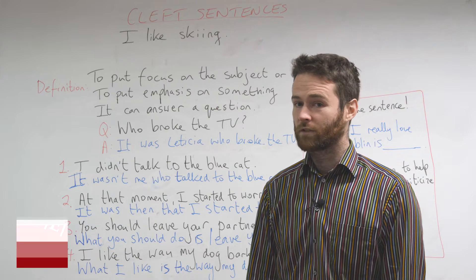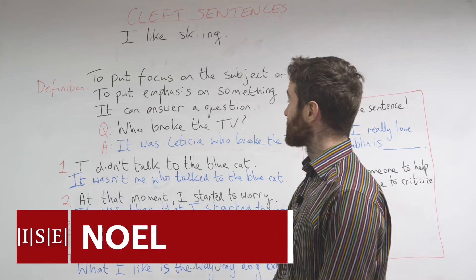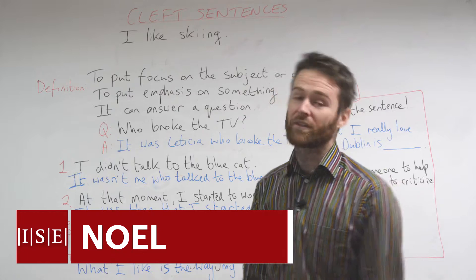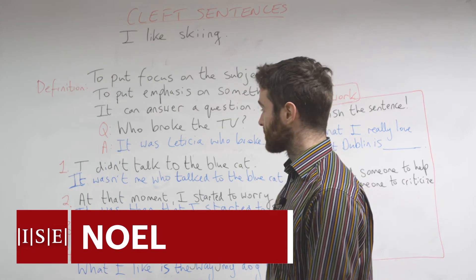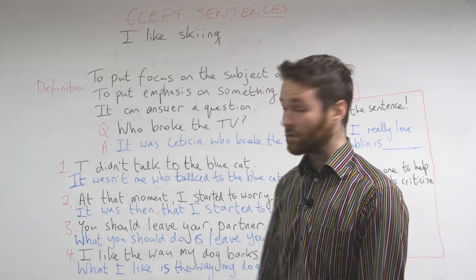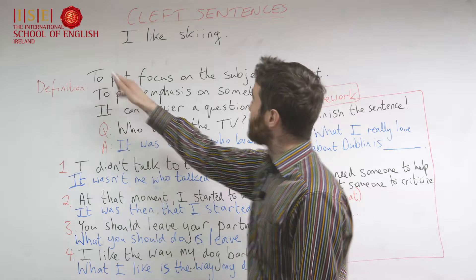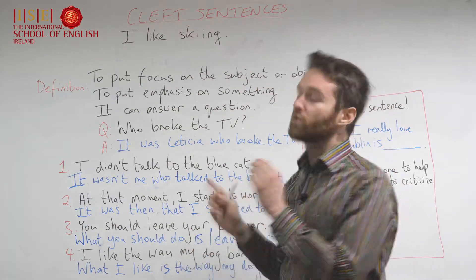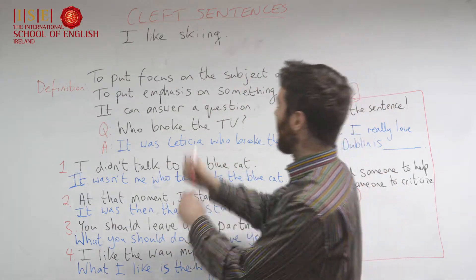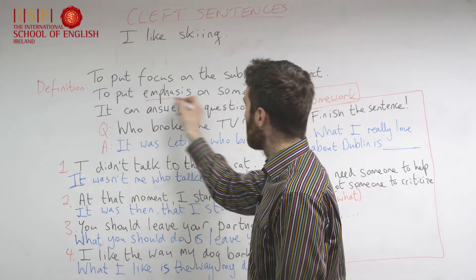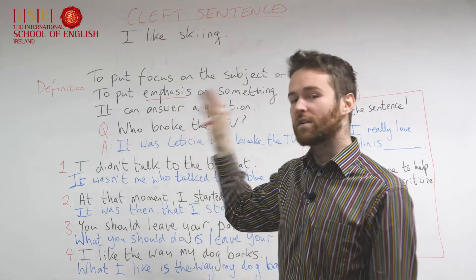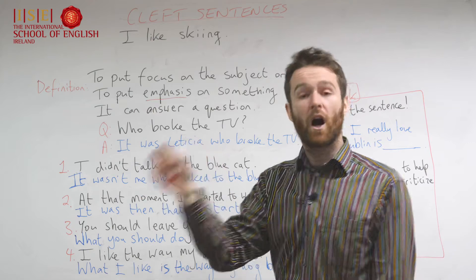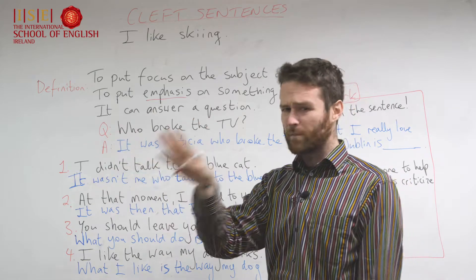Hello, so cleft sentences — we're gonna look at cleft sentences today. They sound difficult but they're pretty easy. Let's look at the definition: cleft sentences are used to put focus on the subject or object, or to put emphasis on something. That's the real key — to put emphasis on a certain topic, object, subject, whatever we want to highlight.